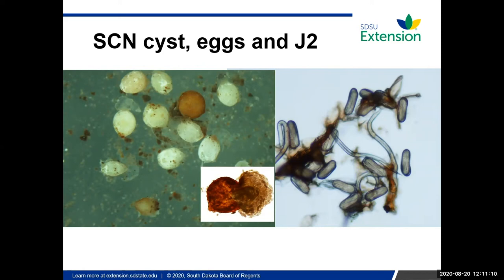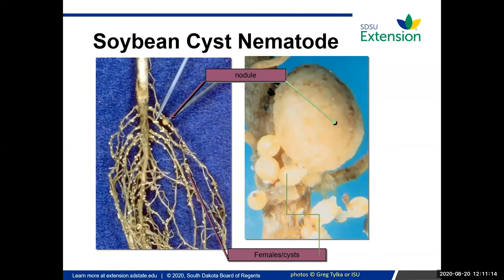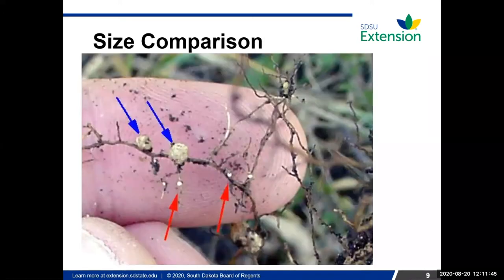Looking closely at roots, you can see the nice large nitrogen-fixing nodule and the little white specks — those are the female cysts. The nitrogen-fixing nodule is about the size of a pencil-top eraser, versus the cyst which is about the size of a period at the end of a sentence. Under magnification you can see it very clearly. The blue arrows in the image point to the nitrogen-fixing nodules and the red arrows indicate the female SCN cysts.